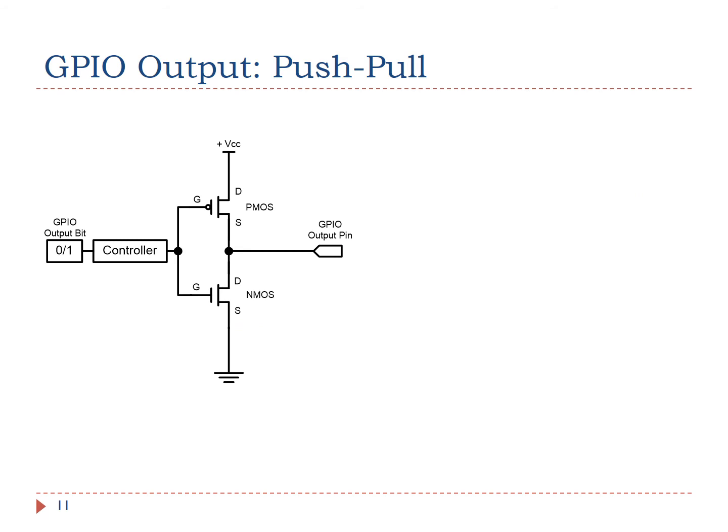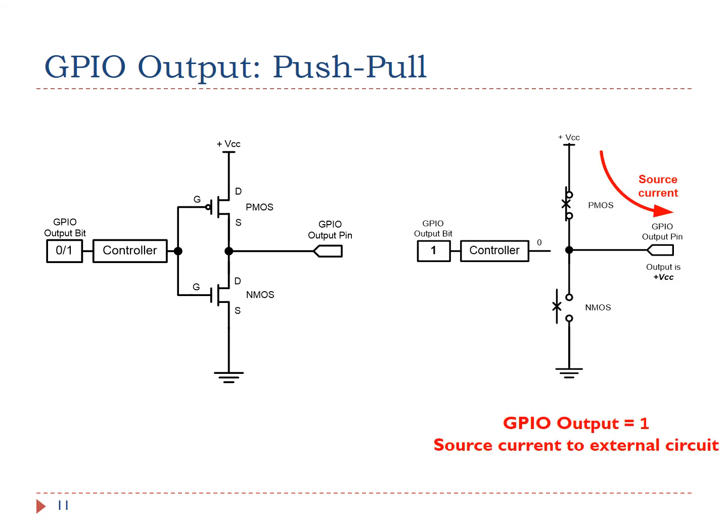A push-pull output consists of a pair of complementary transistors, as shown in this slide. Only one of them is turned on at any time. When the pin outputs logic 1, the transistor connected to the power supply is turned on. The other transistor is turned off. It provides an electric current to the external circuit connected to the output pin, as shown in the right figure.